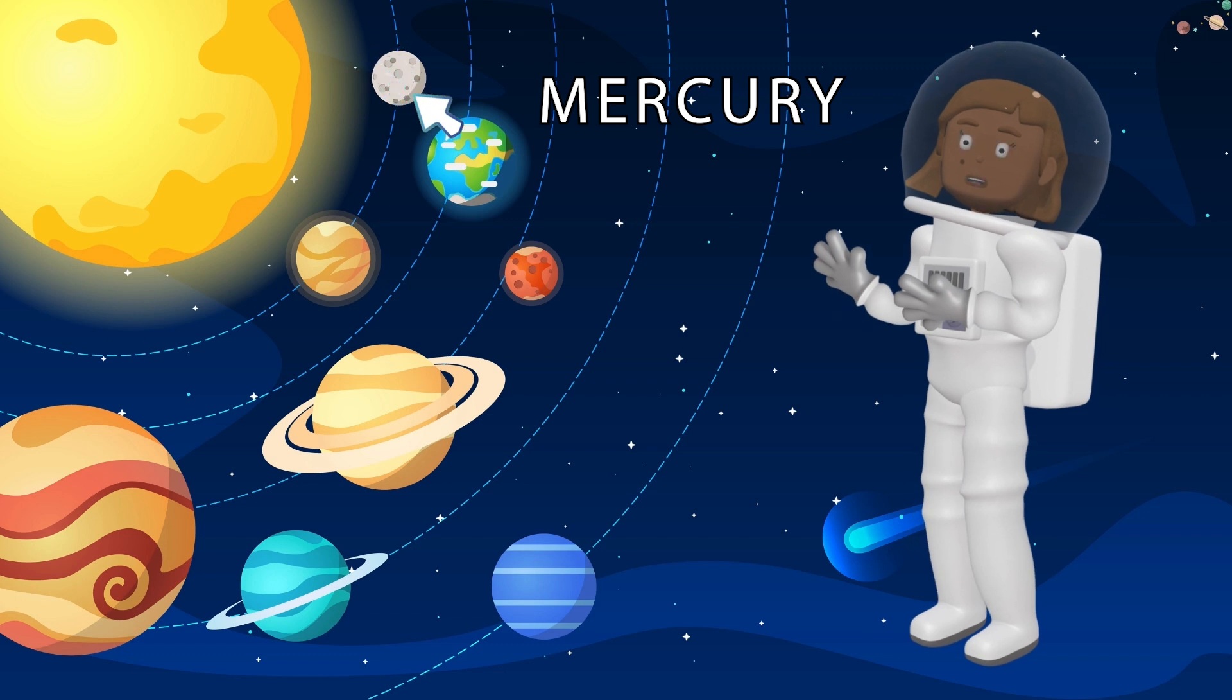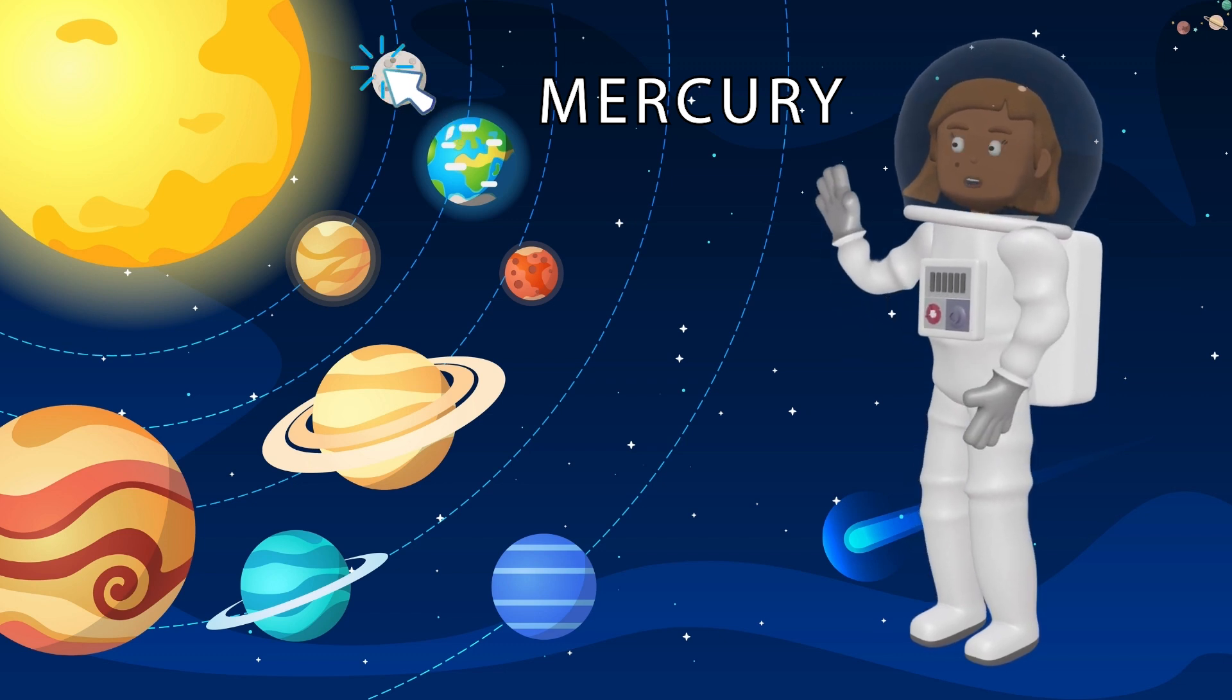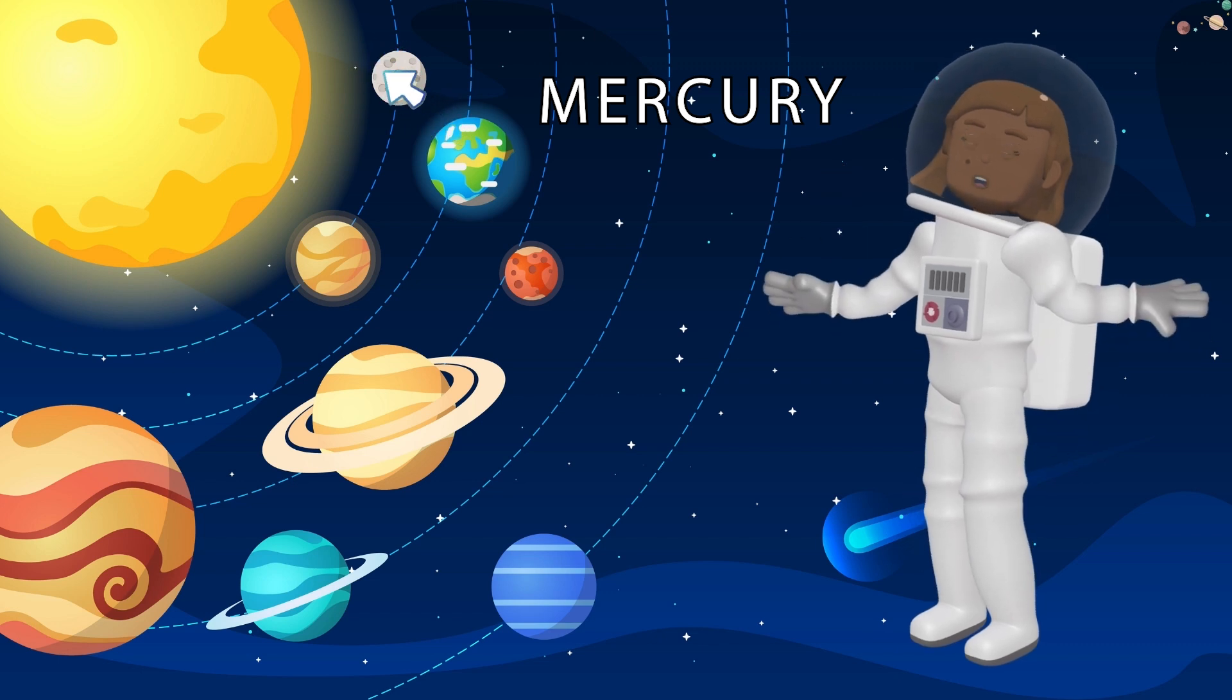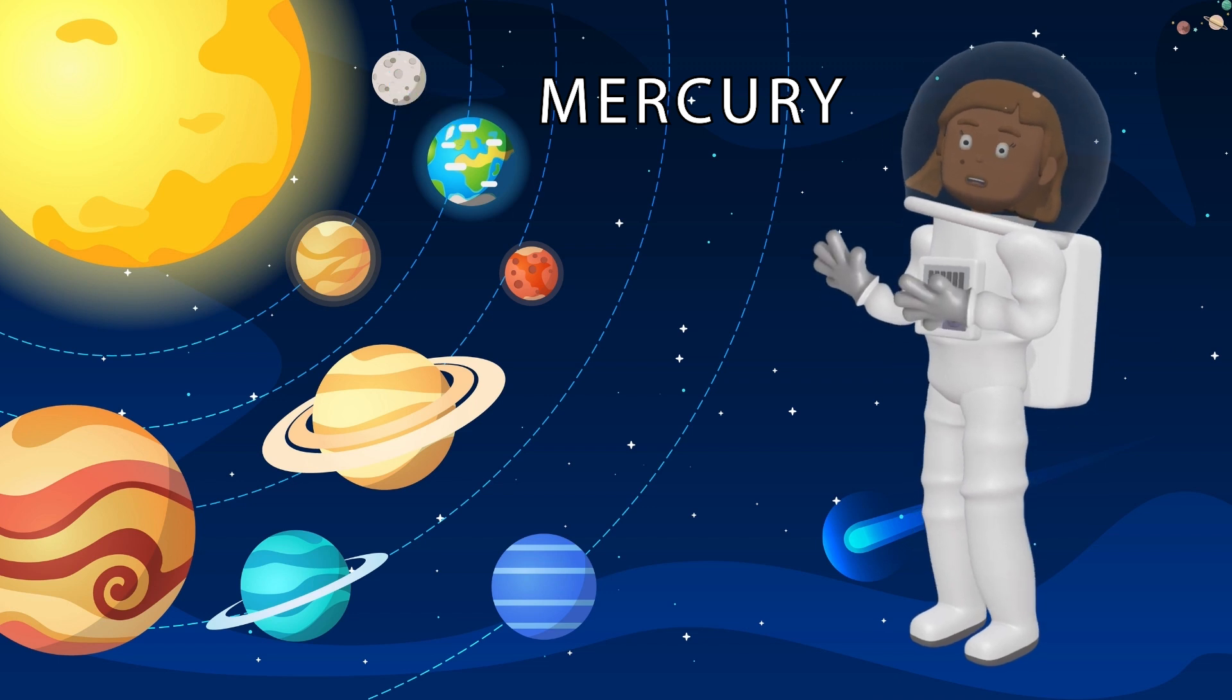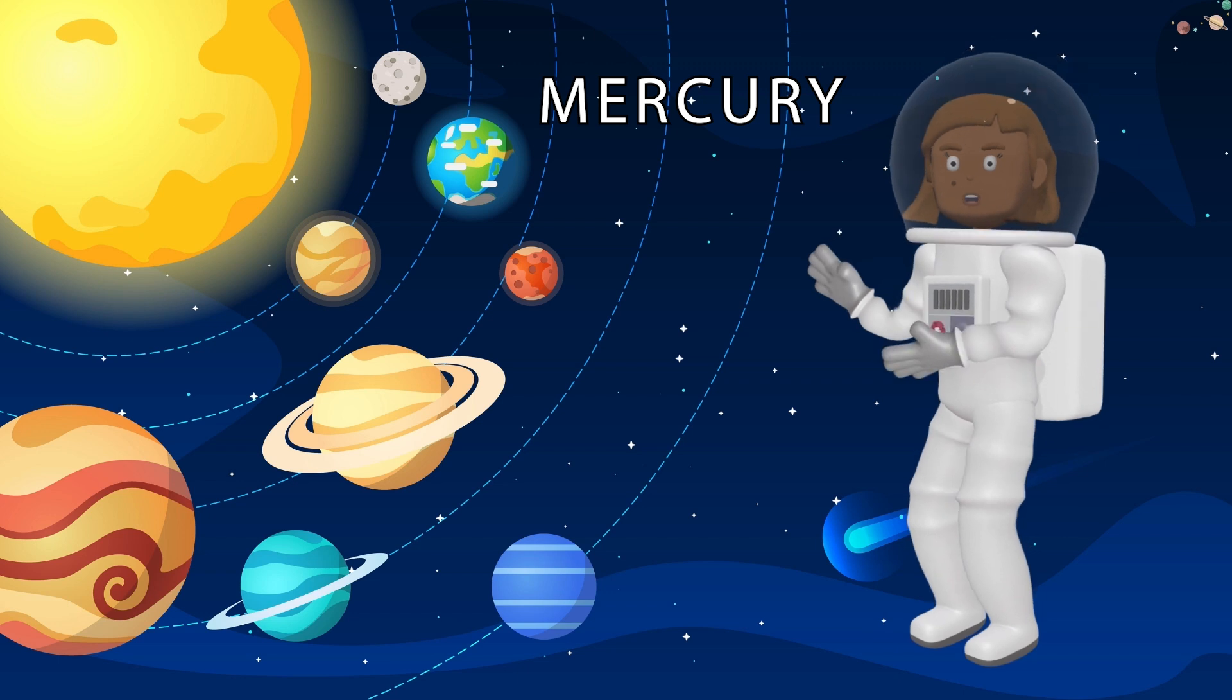First stop is Mercury! Mercury is the closest planet to the sun, and boy, it's hot here! During the day, it can get as hot as an oven, over 800 degrees Fahrenheit! But at night, it's freezing cold, dropping to minus 300 degrees! Brrrr! Mercury is also the smallest planet in our solar system and has lots of craters, just like our moon!